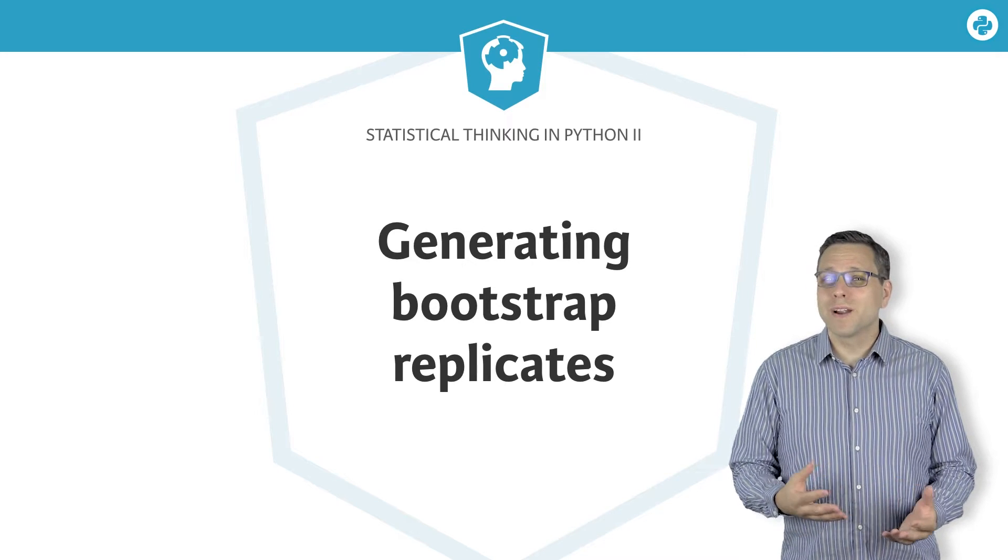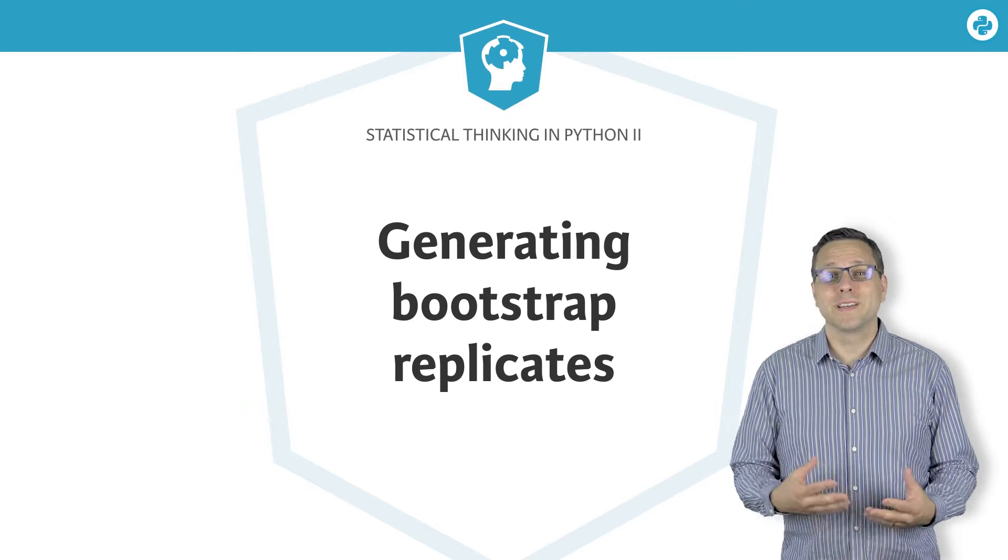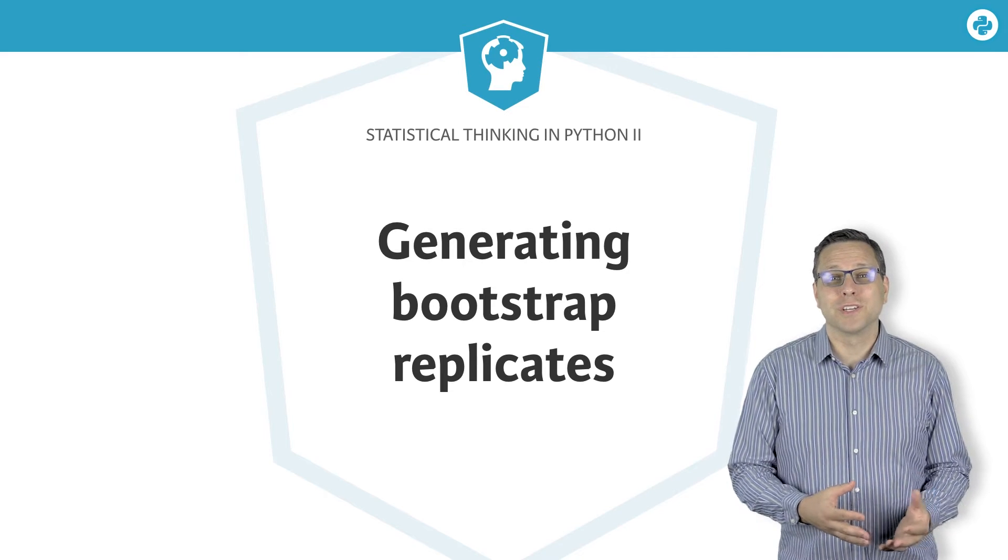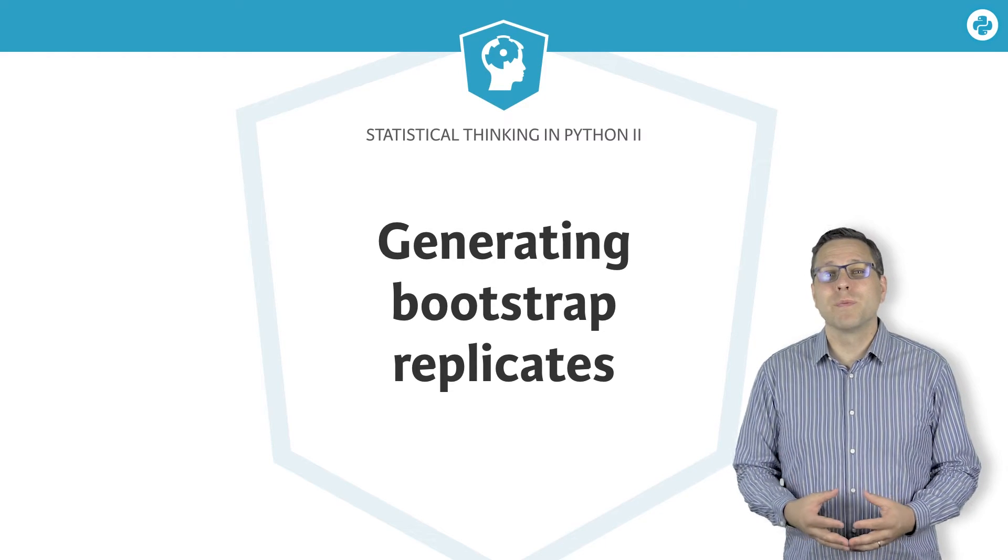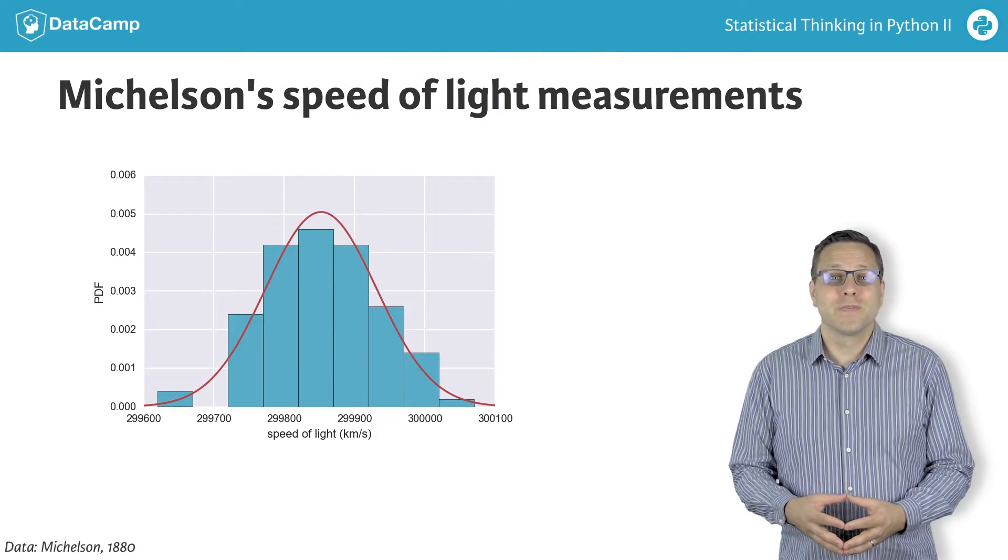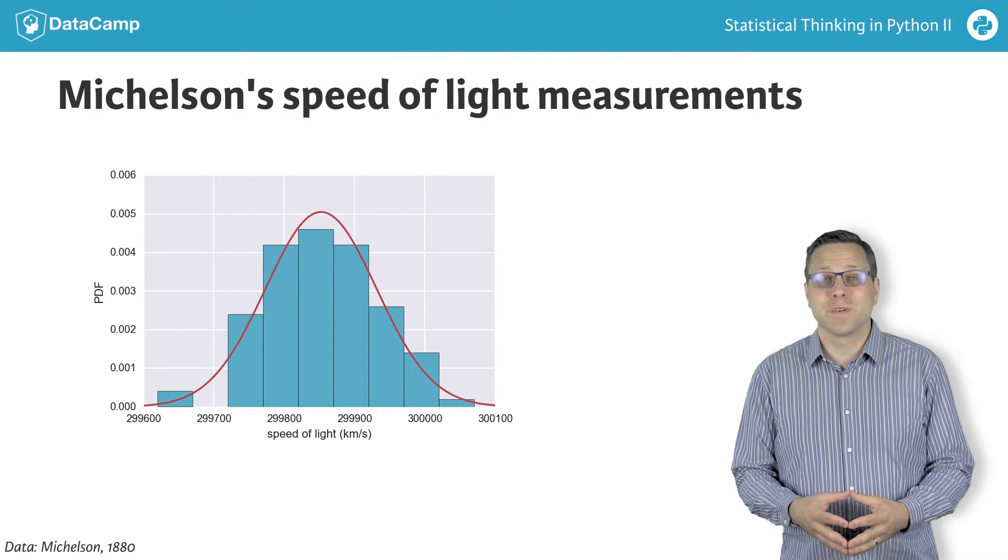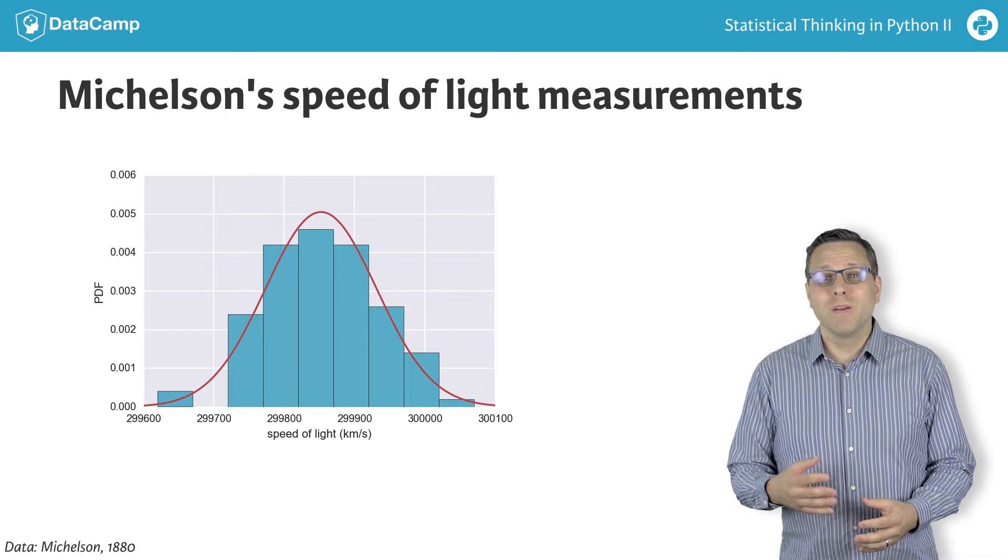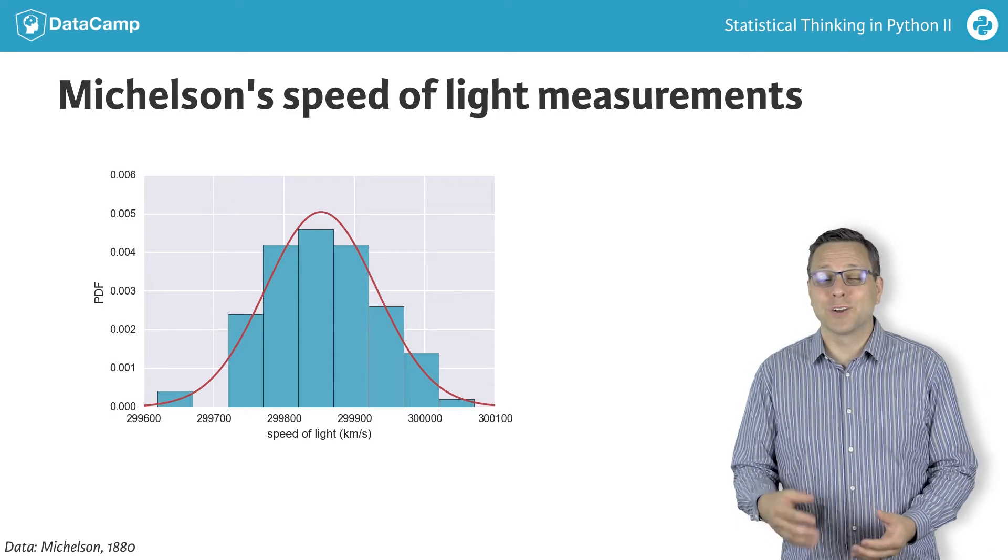In inference problems, it is rare that we are interested in the result of a single measurement or data acquisition. We want to say something more general. Michelson was not interested in what the measured speed of light was in the specific 100 measurements conducted in the summer of 1879. He wanted to know what the speed of light actually is.